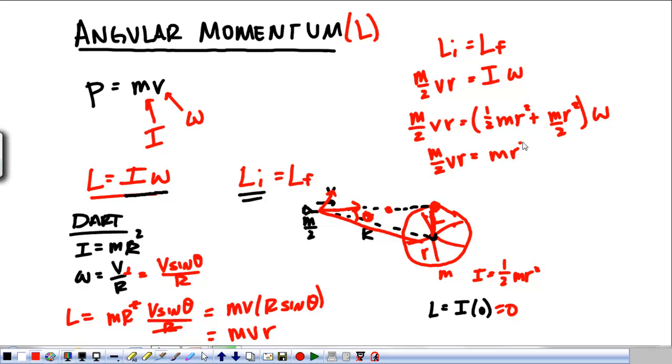So, M R squared, so M R squared, omega, 1 R goes away, M's go away, and omega is equal to V over 2 R. That's the correct units for omega, so that's good news. But once we have the initial and final angular momentum, all we have to do is find the new moment of inertia of the system, and we're good to go.